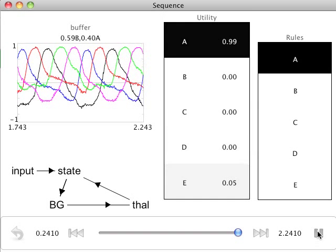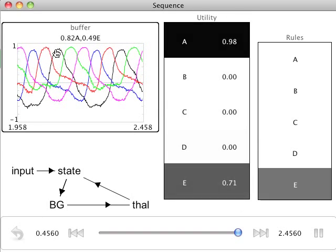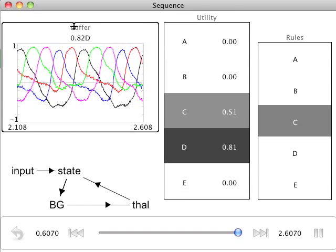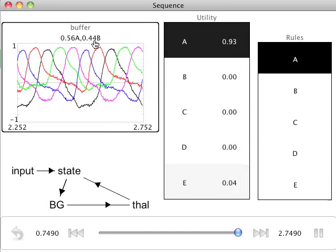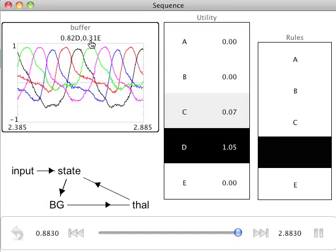This activates the action to change the cortical state to A, which happens when we restart the simulation. This same progression can be seen in this semantic pointer graph, where the similarity of all states to the current cortical state is displayed.